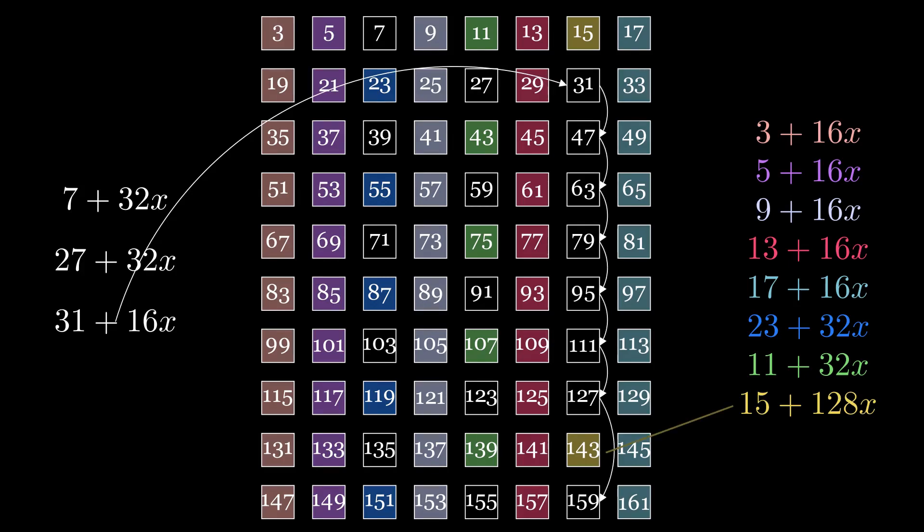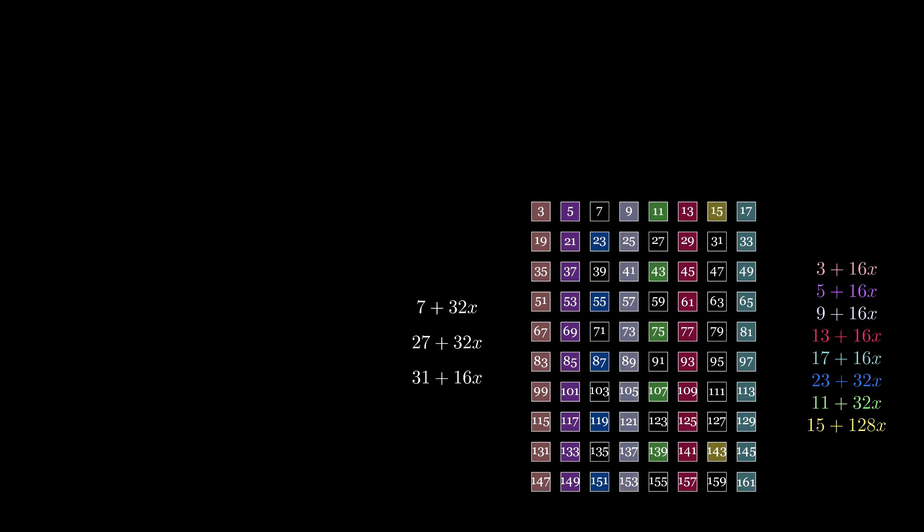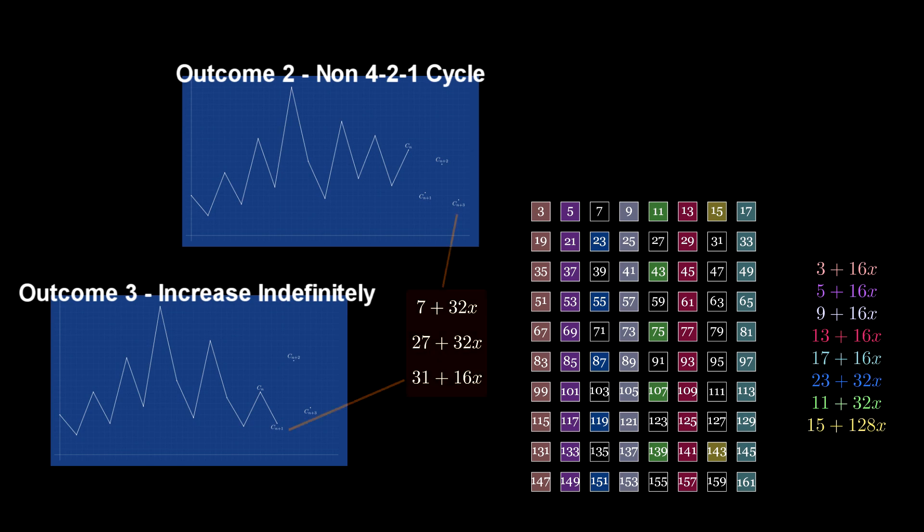Following this, if a sequence is discovered that disproved the Collatz conjecture, then one or more values from that sequence must take one of these forms.